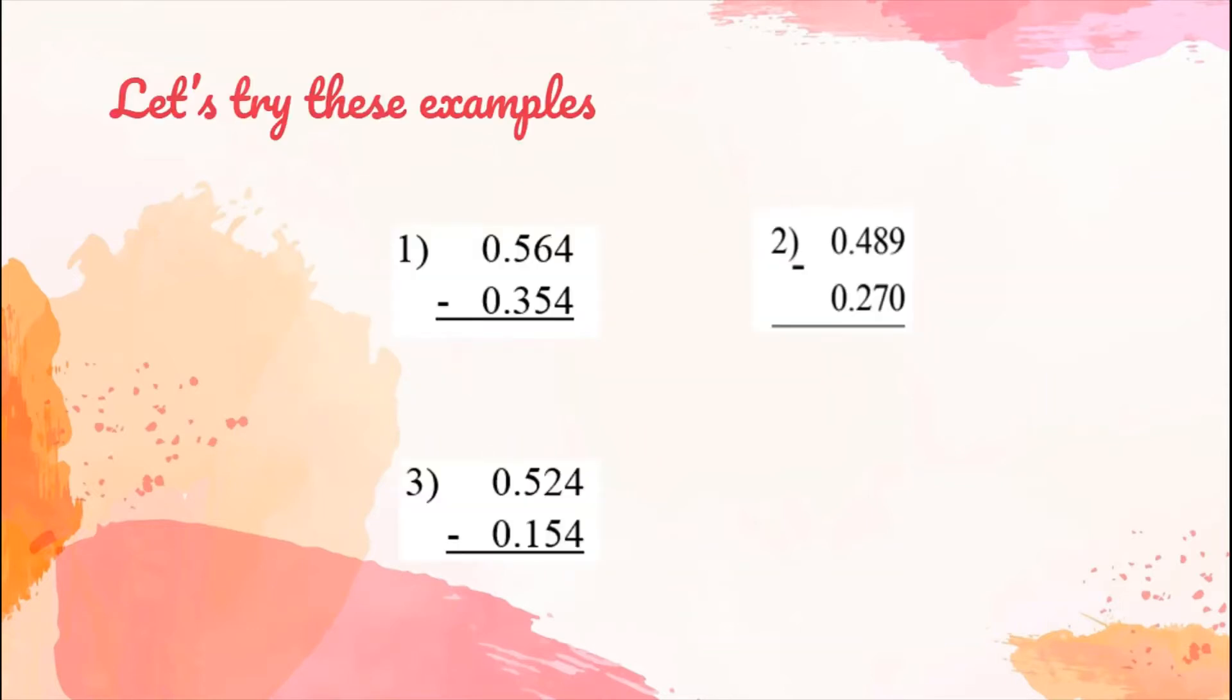Now let us try these examples. Let's start with number one. We have 0.564 subtracted by 0.354. When we subtract decimals, always begin in the thousandths place or the numbers on the right. 4 minus 4, we have 0. 6 minus 5, we have 1. 5 minus 3, we have 2.